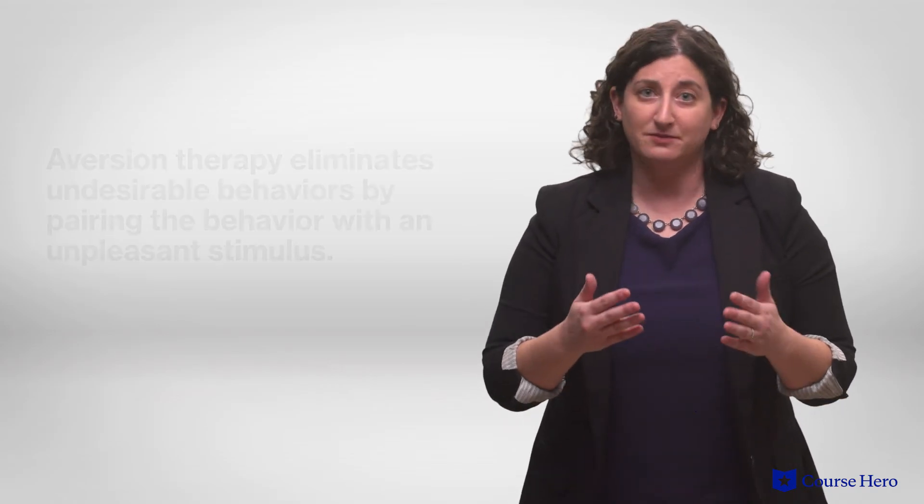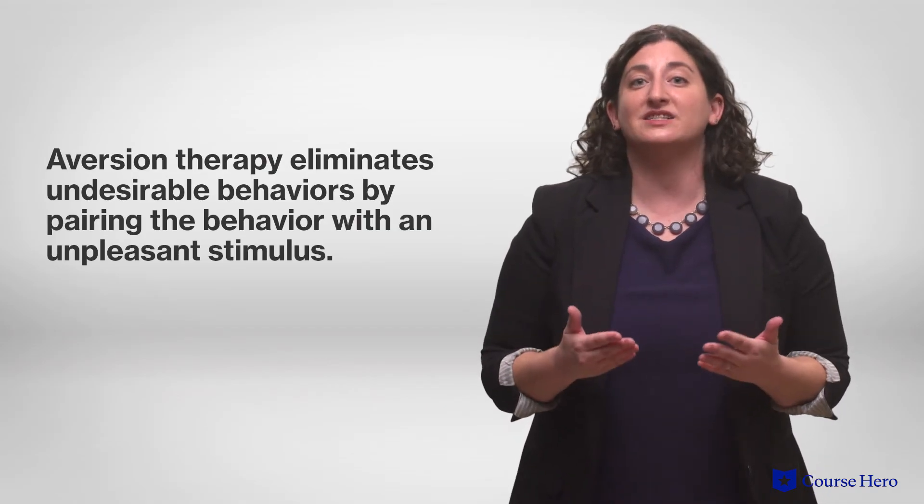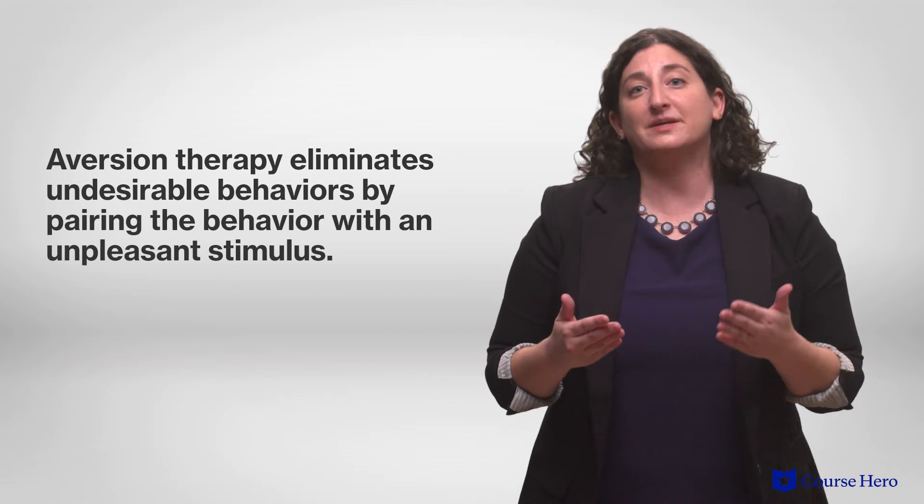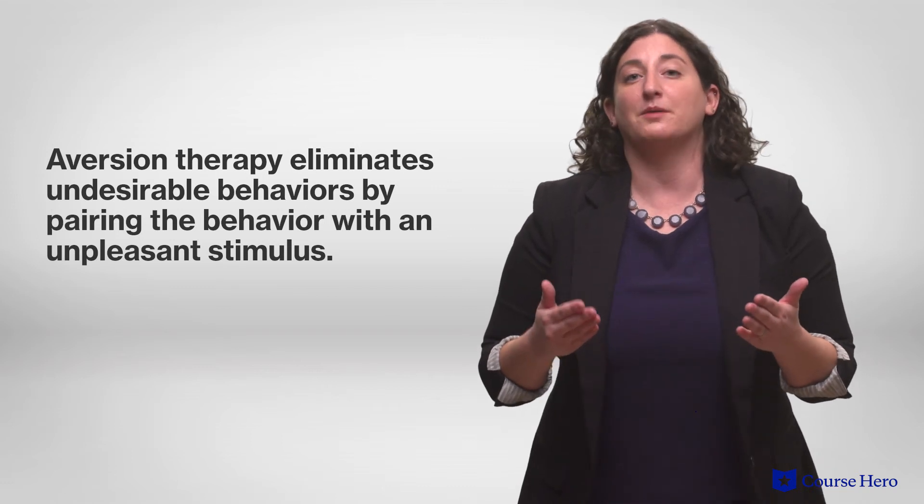Classical conditioning is also used in aversion therapy to eliminate undesirable behavior by pairing the behavior with an unpleasant stimulus. These pairings are continued until the undesirable behavior elicits an aversion — an intense dislike or feelings of disgust — even when the unpleasant stimulus is no longer available. It's used to treat everything from alcohol abuse to compulsive nail biting.